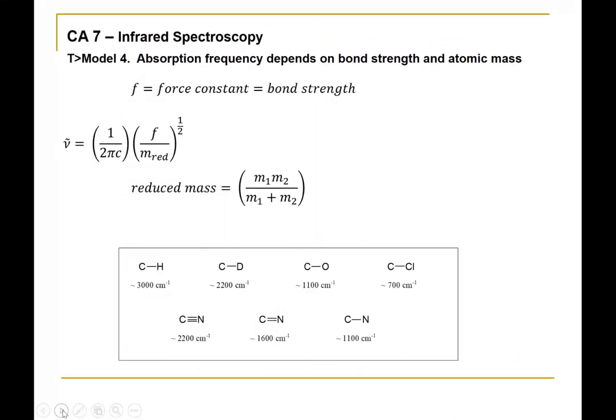In teaching model number four, I introduce an equation relating wave number to bond properties. I'll never ask you to do a calculation with it, but it's helpful to know what affects the wave number or frequency of light absorbed. The F term, called the force constant, is essentially a reflection of bond strength. A greater wave number and greater frequency are required with greater bond strength.